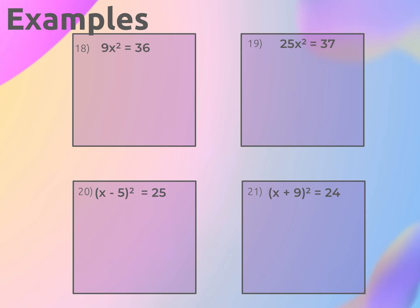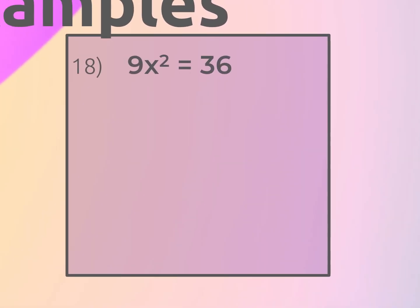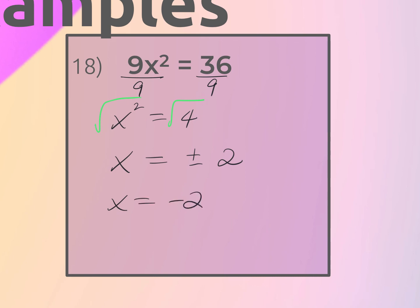For number eighteen, isolate the square term by dividing both sides by 9: x² = 4. Square root both sides: x = ±2. So x = −2 and x = +2.